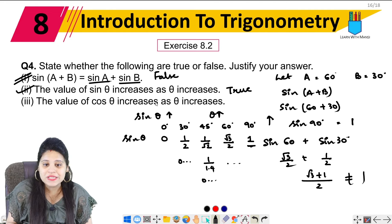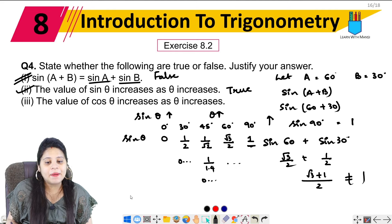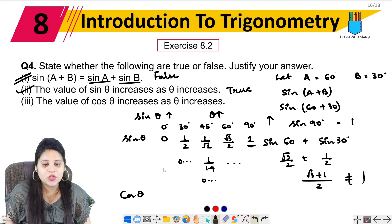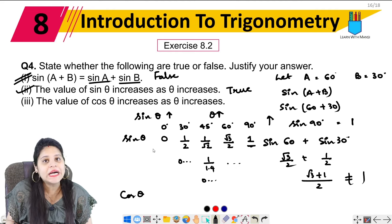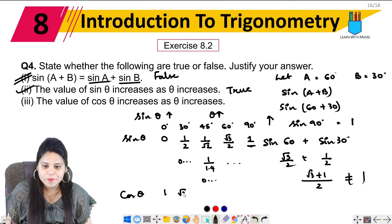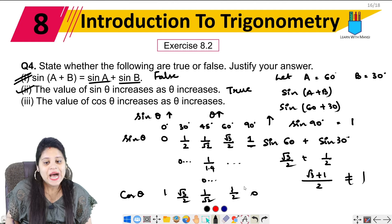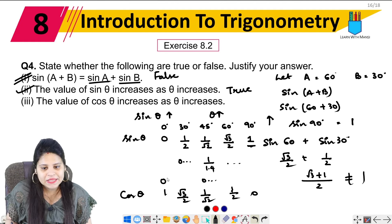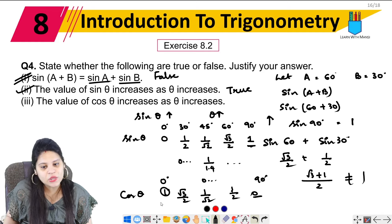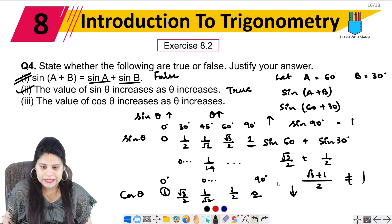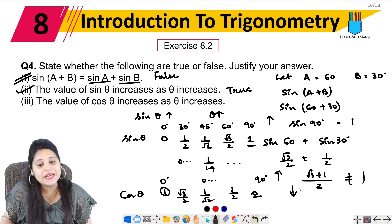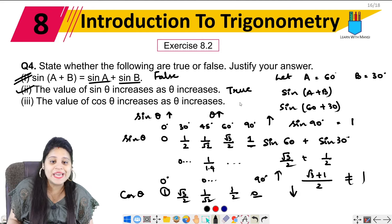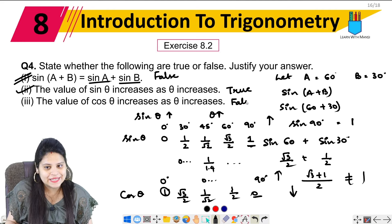The value of cos theta increases as theta increases. Now we know from the table, cos theta values are: 1, root 3 upon 2, 1 upon root 2, 1 upon 2, and 0. Cos 0 degree is 1 and cos 90 degrees is 0, so the value decreases. Here the value of cos theta is decreasing. So this statement is false.